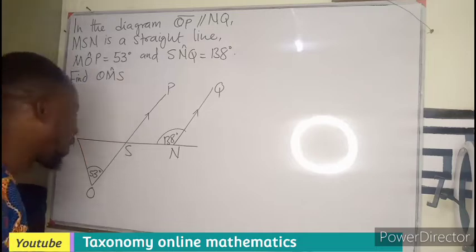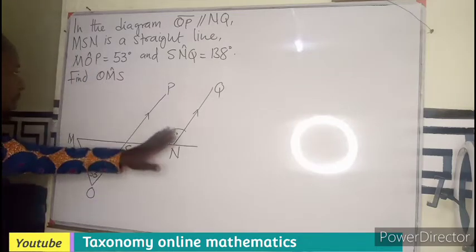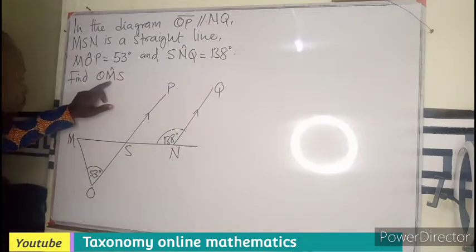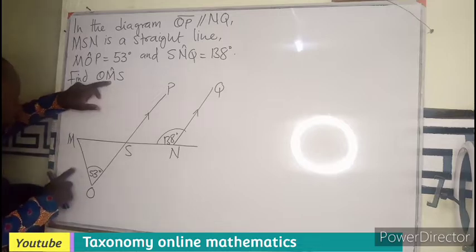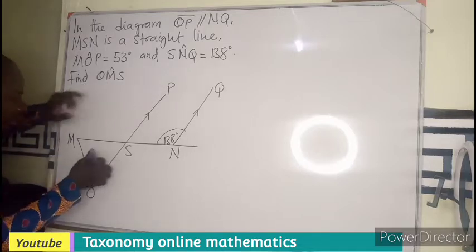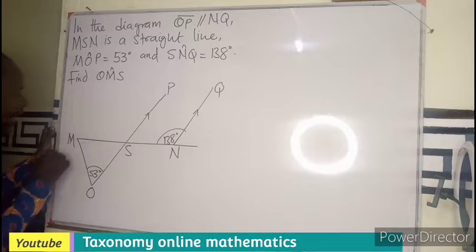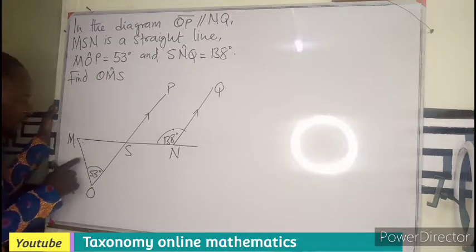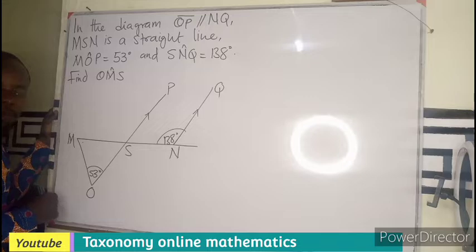The sum of angles in a triangle. The various angles have been given to us. We have to find the value of angle OMS, this very angle. We know that the sum of angles in a triangle gives us 180.